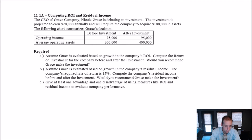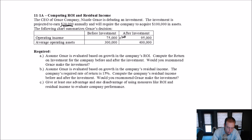Before the investment, they've got $75,000 in operating income. This new investment makes them $20,000. Before the investment, they had $300,000 in average operating assets. After the investment, they'll have $100,000 more, so $400,000.